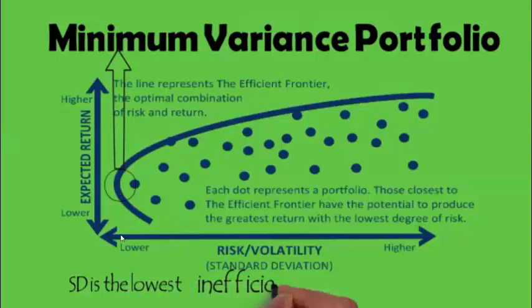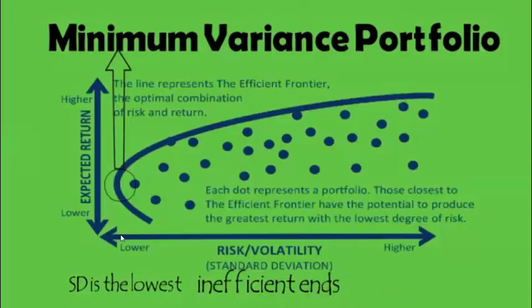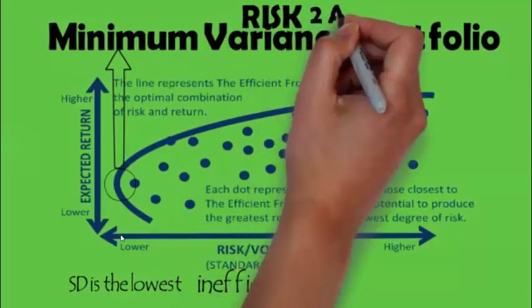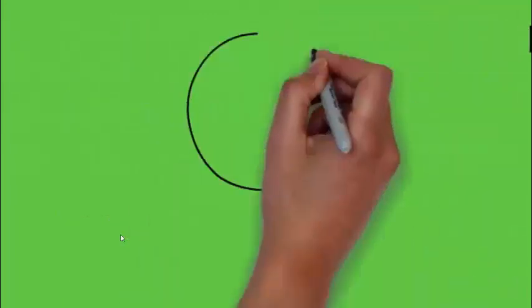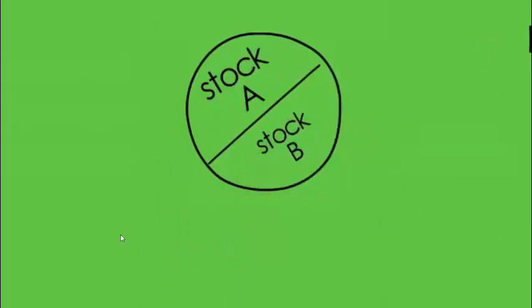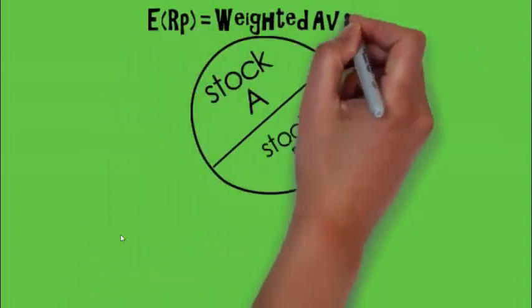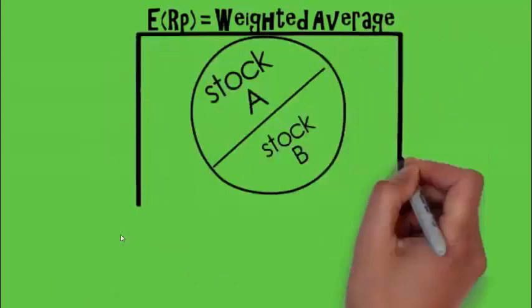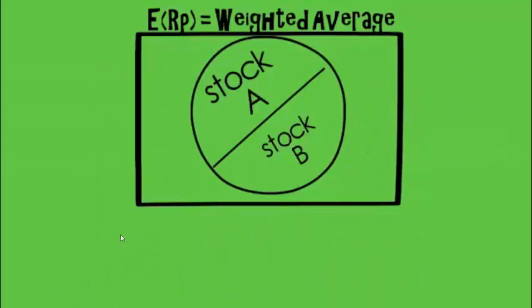So how do we calculate the weight to achieve this minimum variance portfolio? For example, consider a portfolio of stock A and stock B. The expected return will simply be the weighted average, which is the easiest thing to calculate.